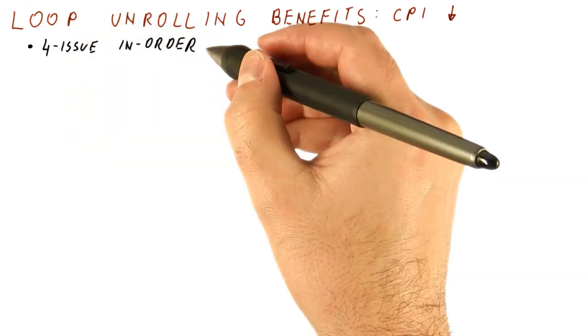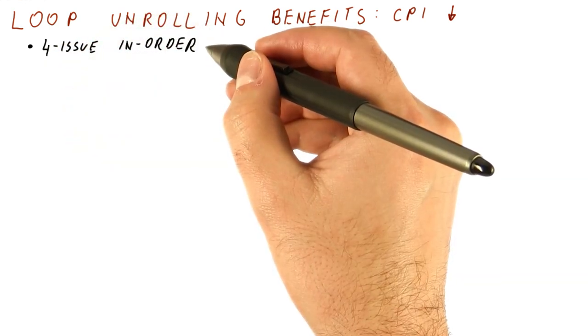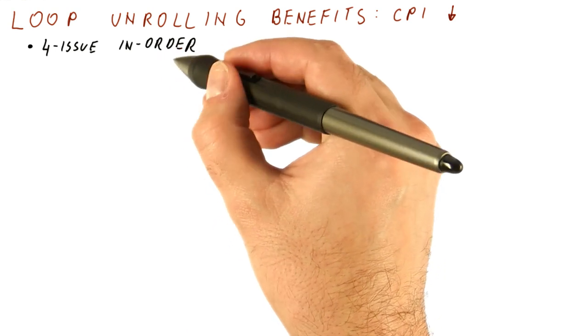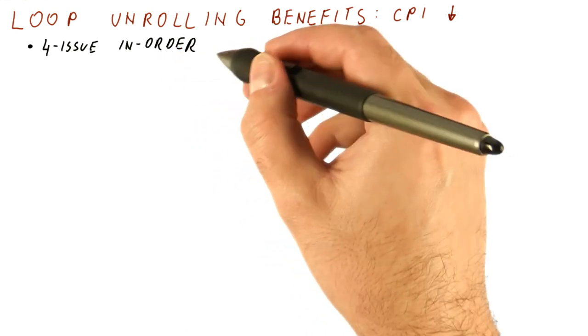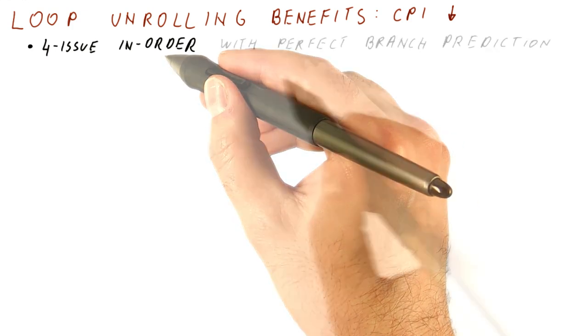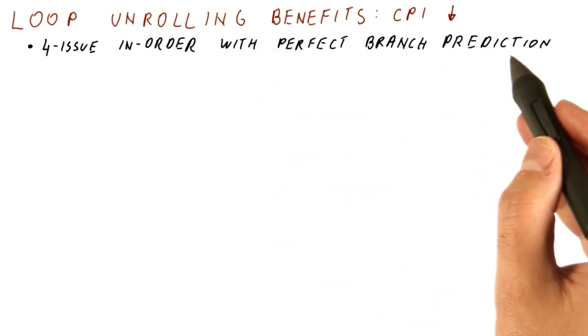So let's assume we have a four-issue in-order processor, meaning it's only able to look at the next four instructions to see what can be executed together. And let's assume that the processor has perfect branch prediction.